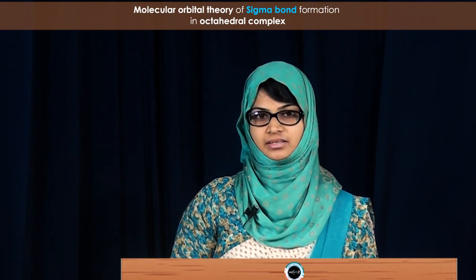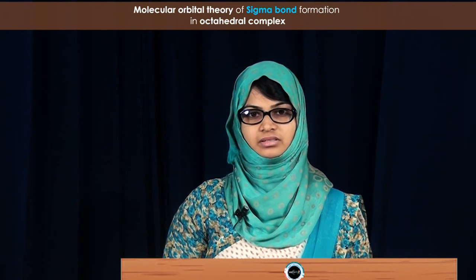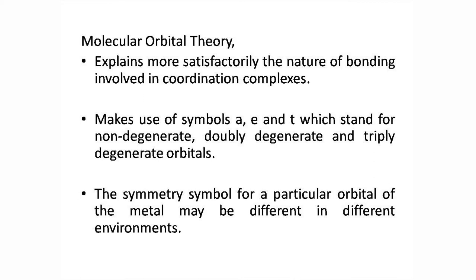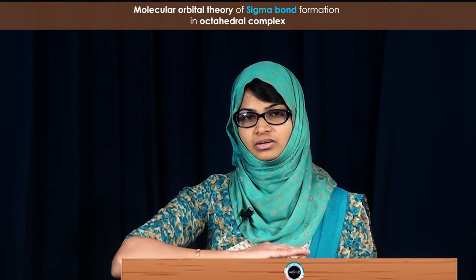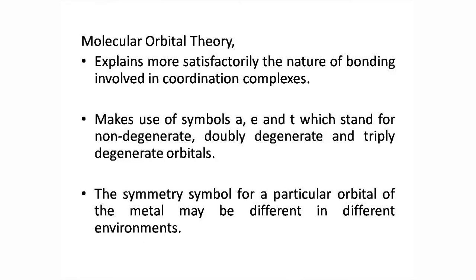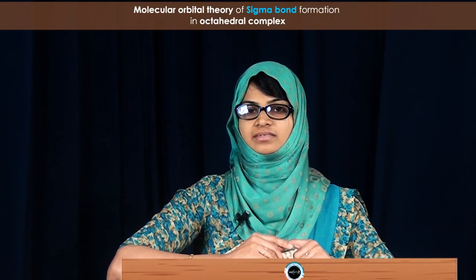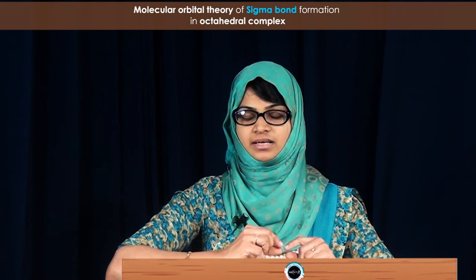We will consider some term symbols used in the explanation of molecular orbital theory. It consists of symbols like A, E, and T. Here A refers to non-degenerate orbitals, T is triply degenerate, and E is doubly degenerate. These symmetry symbols can vary from tetrahedral to octahedral systems. For example, in octahedral complexes the p orbitals are represented as T1u, but in tetrahedral complexes the same p orbitals are represented as T2 orbitals.